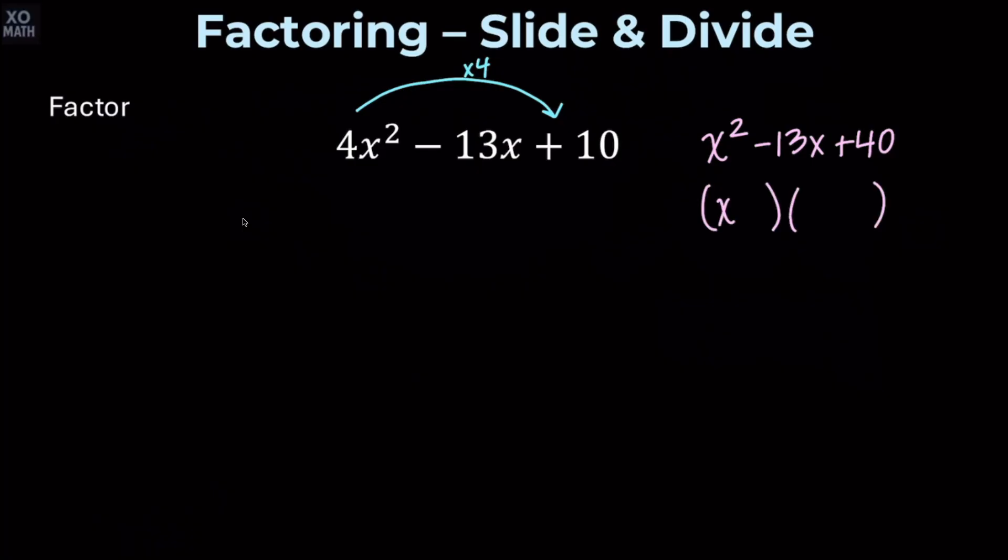To factor this, we're going to need two numbers that multiply together to give us positive 40 and add to give us negative 13. So they're both going to have to be negative. We're going to have negative 8, so x minus 8, and then negative 5, x minus 5.